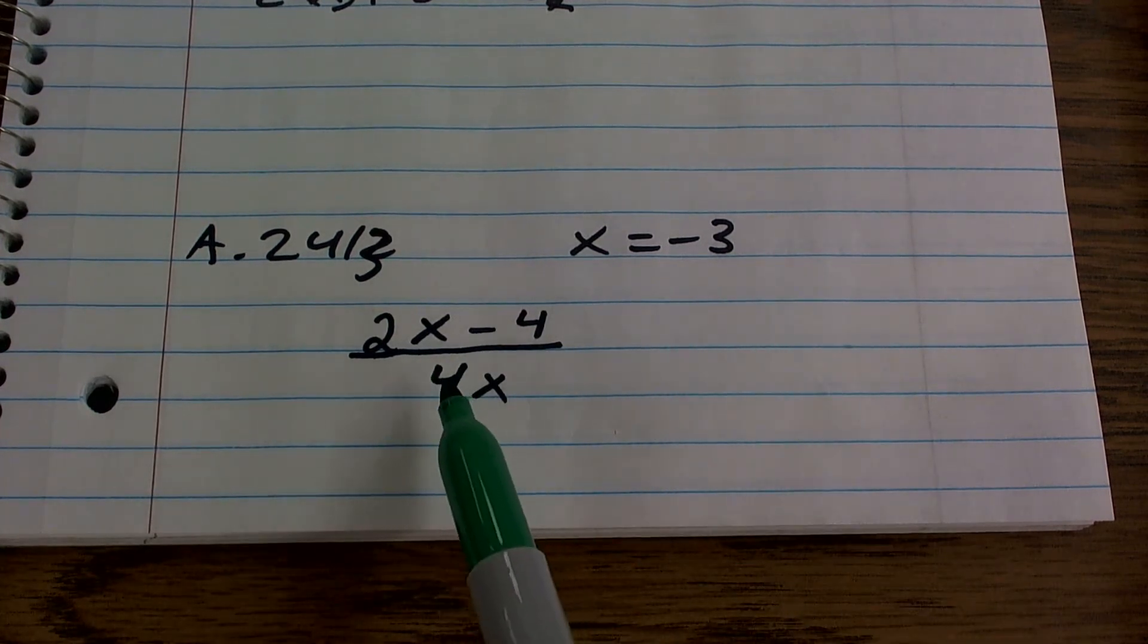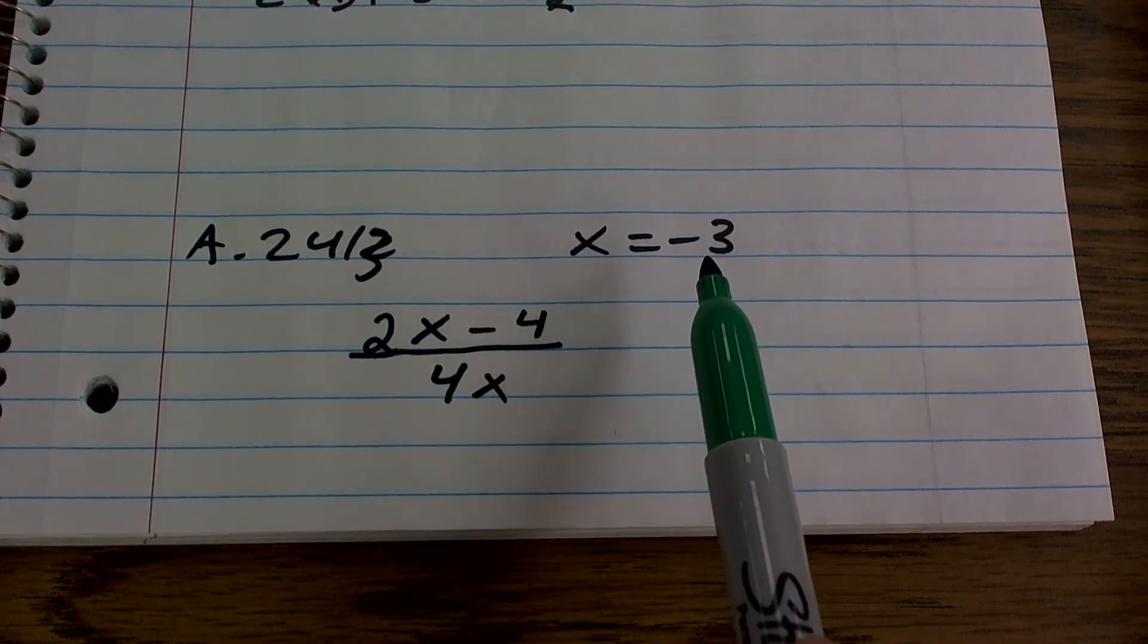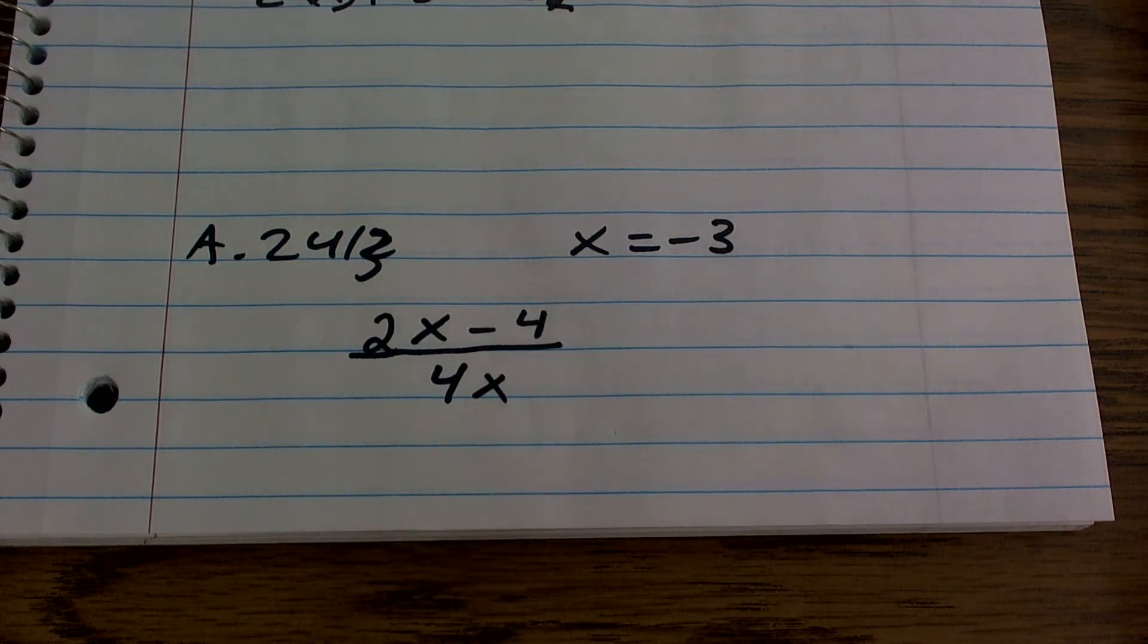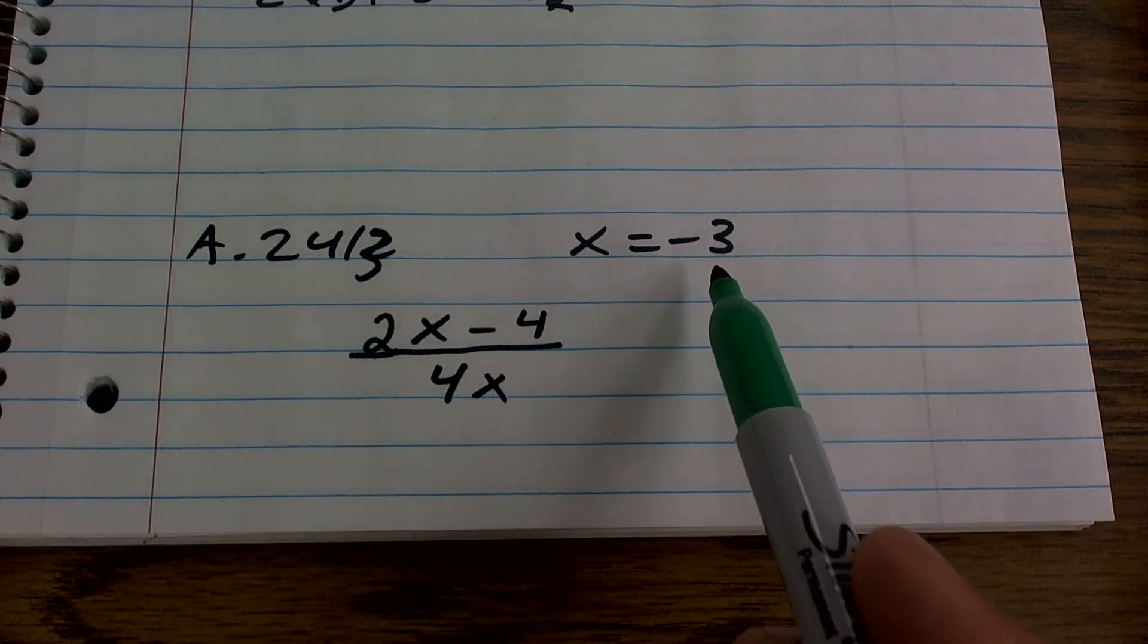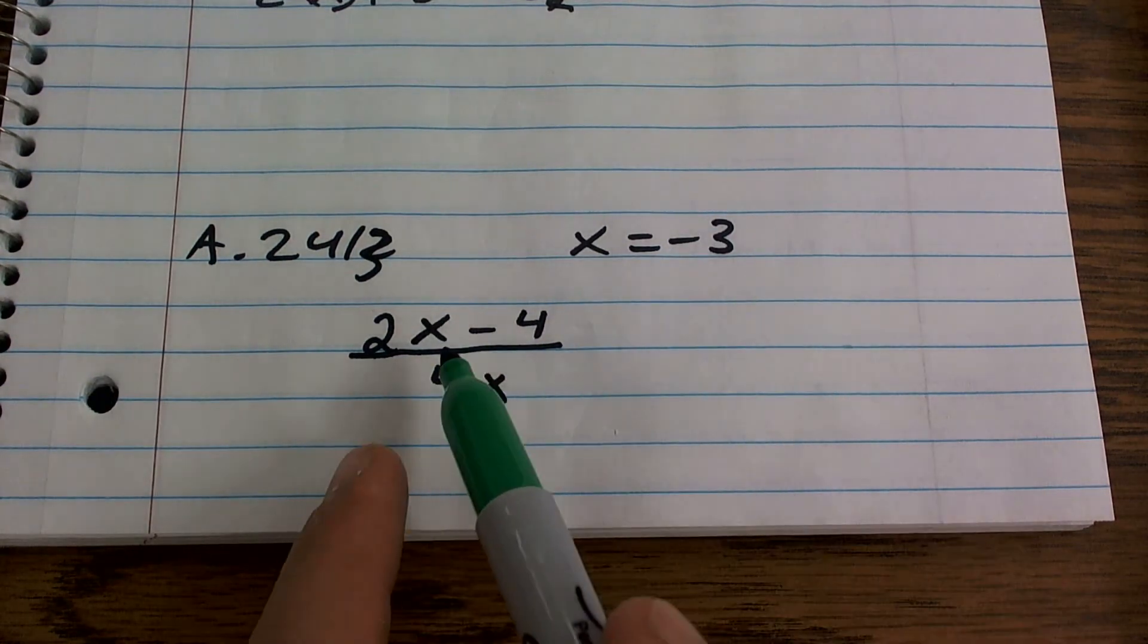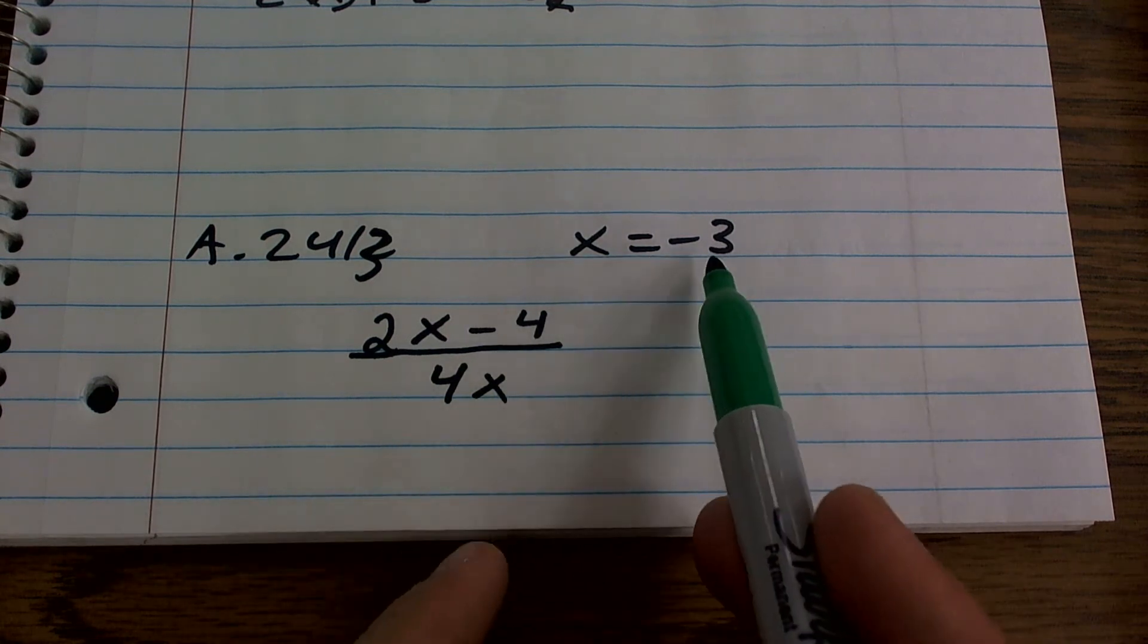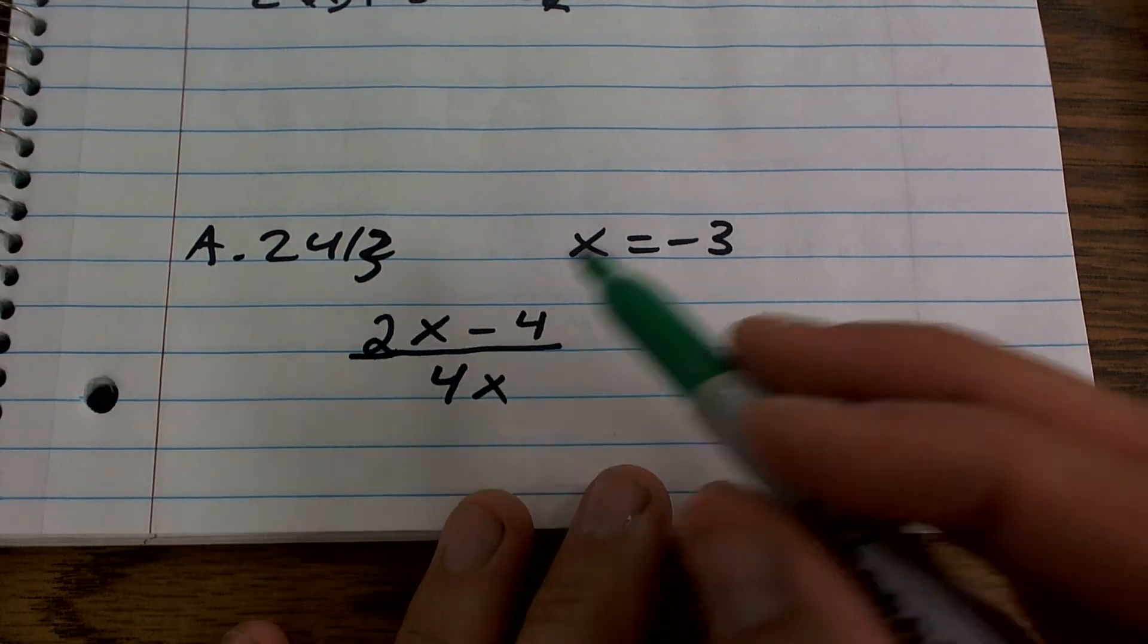But the thing is, up until now we don't know what that variable is. But now I'm telling you, I want you to represent the value of that variable as negative 3. So all I can do is plug in the value negative 3 for my value of x. Because I'm saying the value of x is equal to negative 3. Therefore, we can just replace x with negative 3.